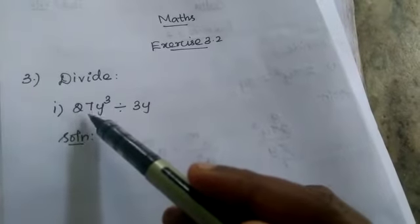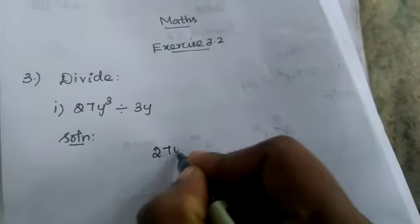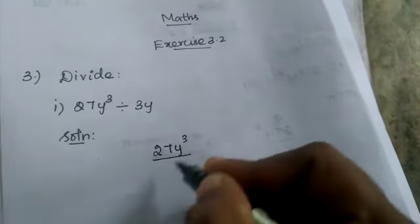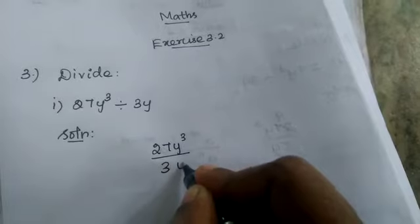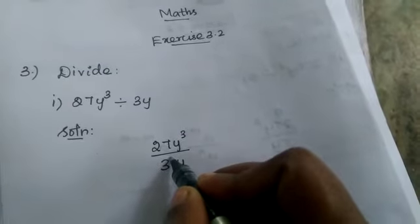Now what is the question? 27y³ divided by 3y. How will you divide? 27y³ divided by 3y. First we divide the constant and divide the variables. First we are dividing the constant.